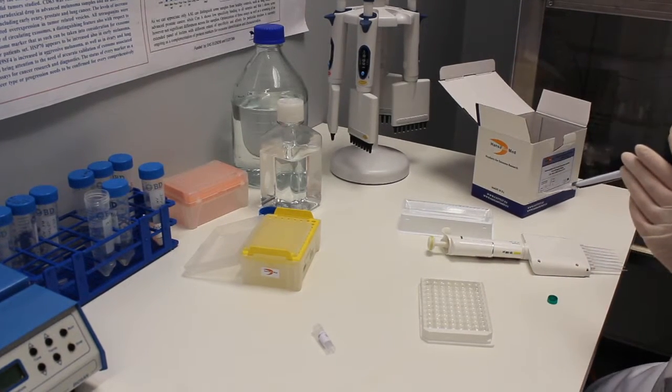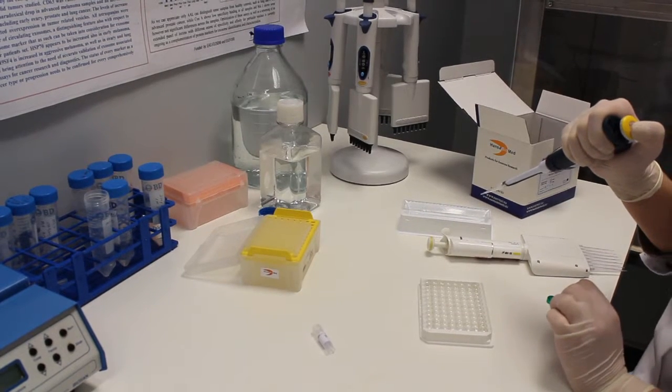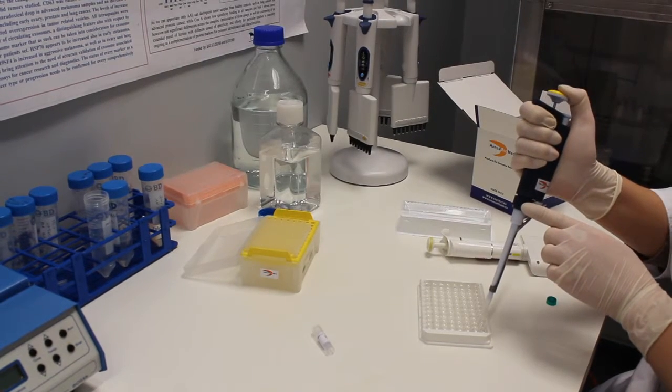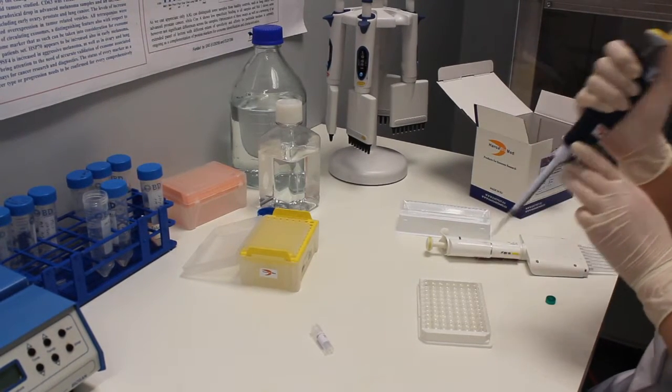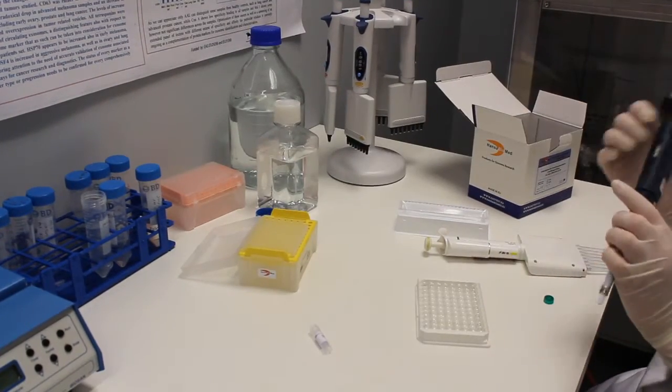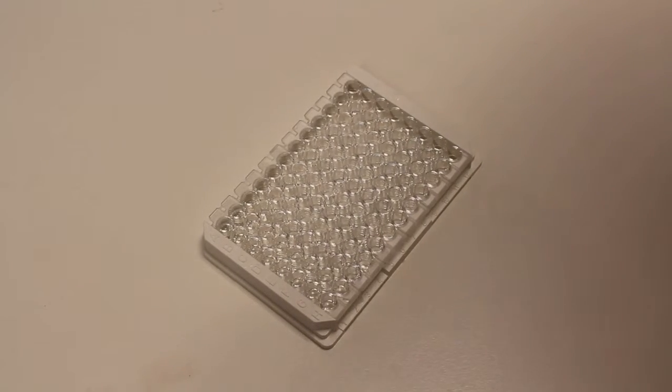After all dilutions in 7th well will remain 200 microliters of sample. Discard 100 microliters from 7th well, so that in all wells was the same volume. Calibration curve is ready. Here you can see the amount of exosomes containing in every well.